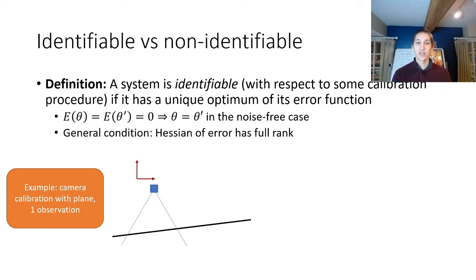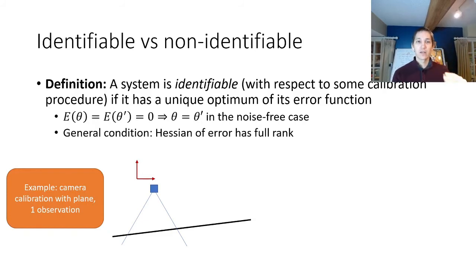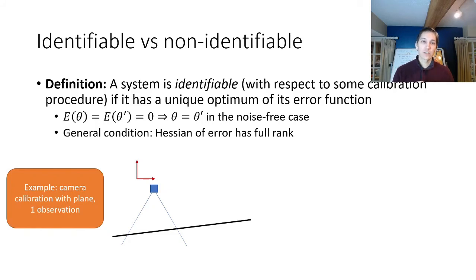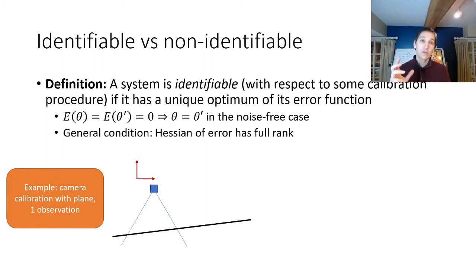This means there's additional complexity because the nuisance parameters mean we have to optimize over a much higher dimensional problem. These nuisance parameters may sometimes cause our optimizations to become non-identifiable. Identifiability means that when we define a calibration procedure, the optimum of the error function will be unique in the noise-free case. The general condition for this is that the Hessian — the matrix of second derivatives of the error — has full rank. You can also reason about identifiability using geometric reasoning.